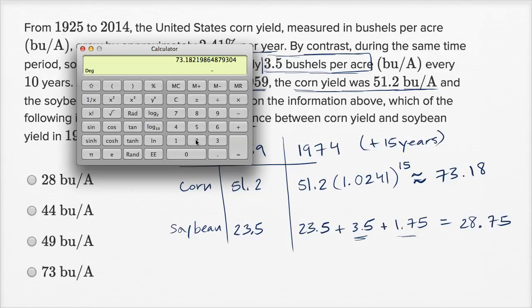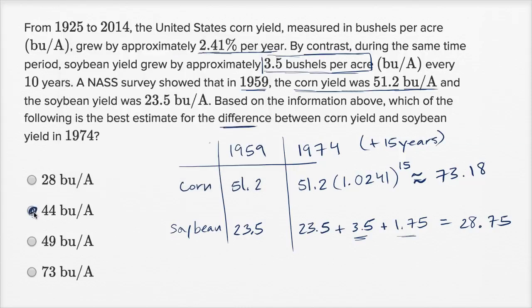So minus 28.75 to calculate the difference gets us to about 44.4, and if we're going to round to the nearest whole, it would be 44. So it's this choice, right over there.